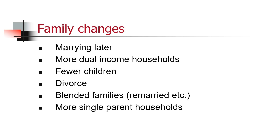In terms of demographics, there are a number of family changes. In many cases, people are getting married later and there are more dual-income households. Many of these folks are called DINKs — people with dual incomes and no kids. Families in the U.S. are having fewer children, and the divorce rate, while it has leveled out over the last few years, continues to be very high. This results in blended families and more single-parent households, all things that marketers need to be concerned about.